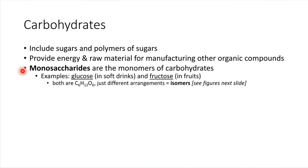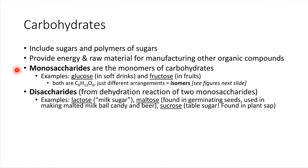If we take two monosaccharides and attach them together by a dehydration reaction, what we end up with is a disaccharide. The prefix 'di' means two — so we go from mono to di, one to two. One example of a disaccharide is lactose, which is the sugar present in milk and gives milk a slightly sweet flavor.